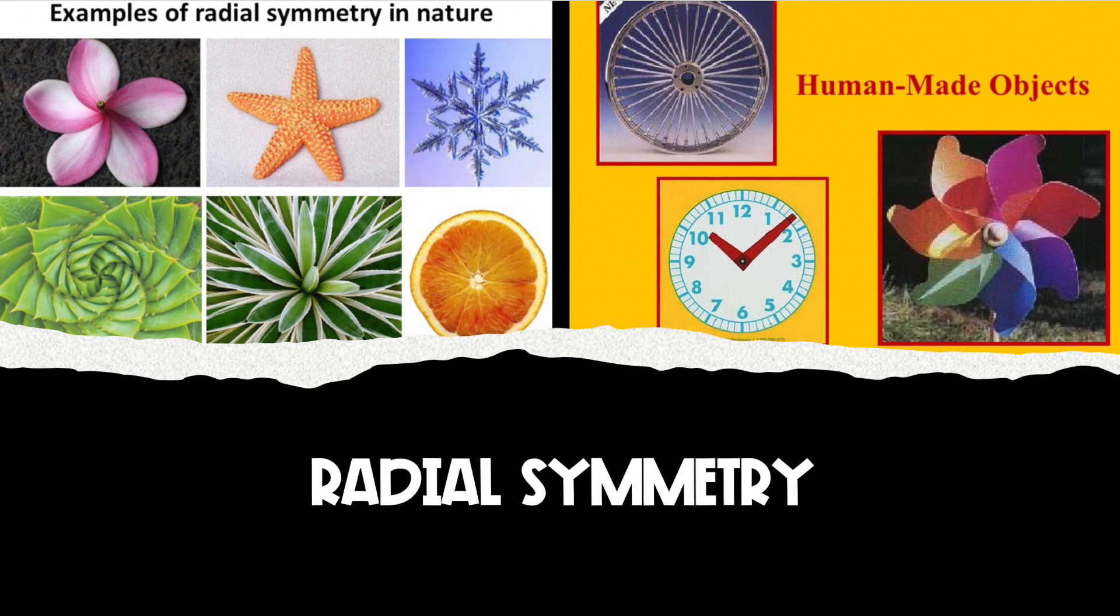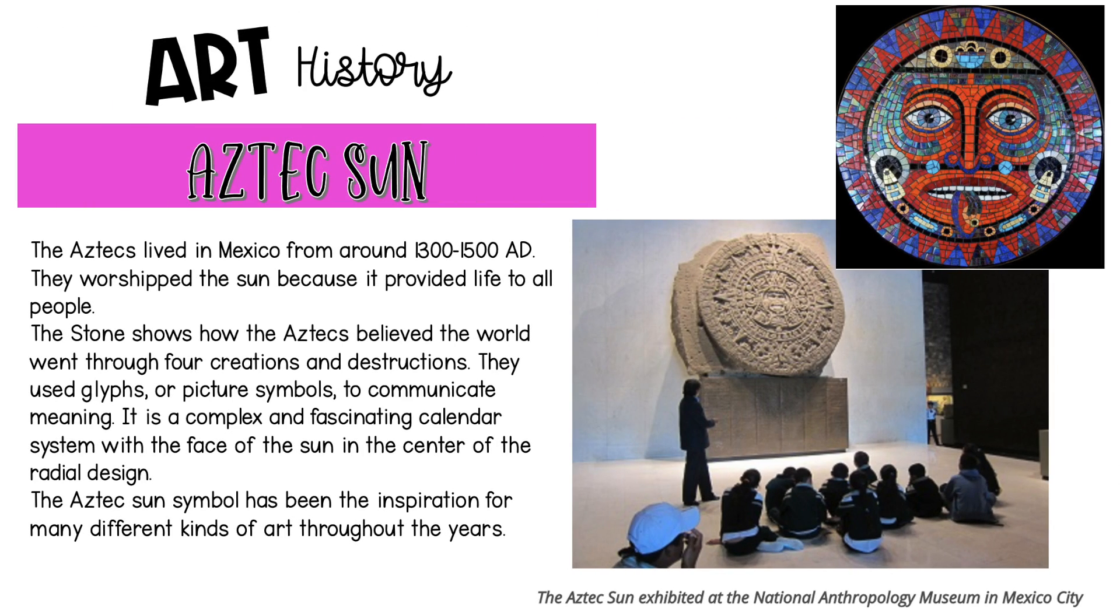Here are some examples of radial symmetry found both in nature and in man-made objects. Now let's learn a little bit about the Aztec Sun. The Aztecs lived in Mexico from around 1300 to 1500 AD.